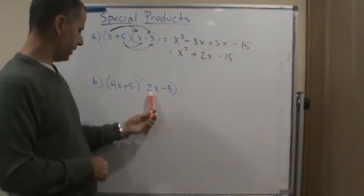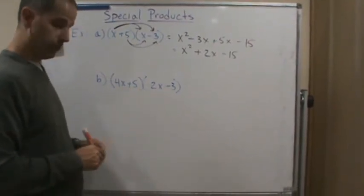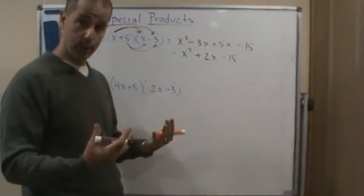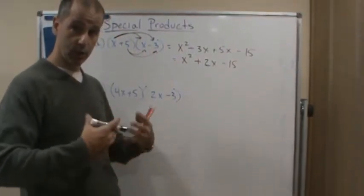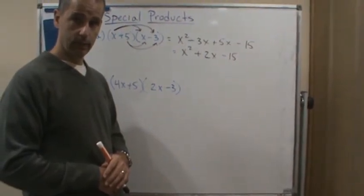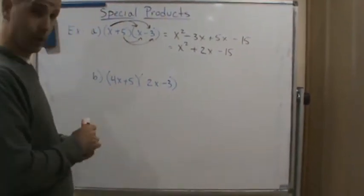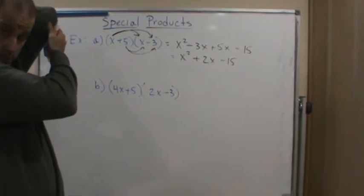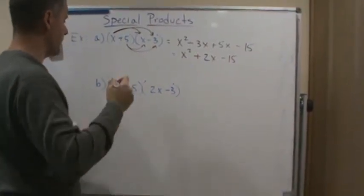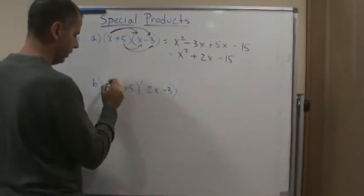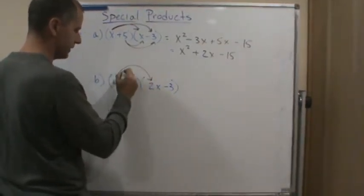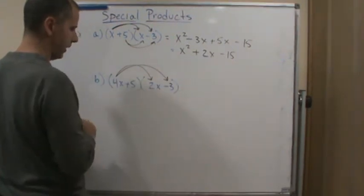Now for this one, you've got a four and a two in front, but again all you do is use the distributive property and combine like terms and simplify. That's all you have to do. So we're going to distribute the four x to the two x and then to the negative three.